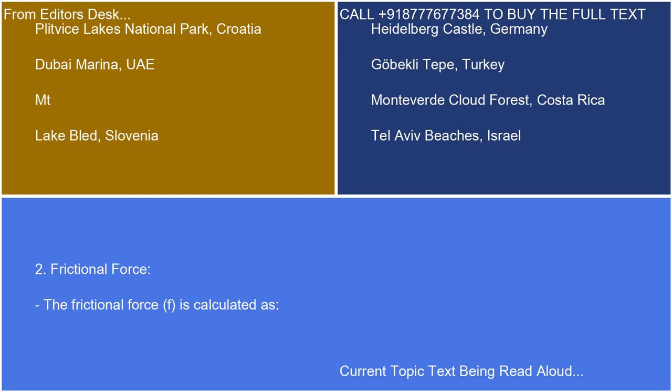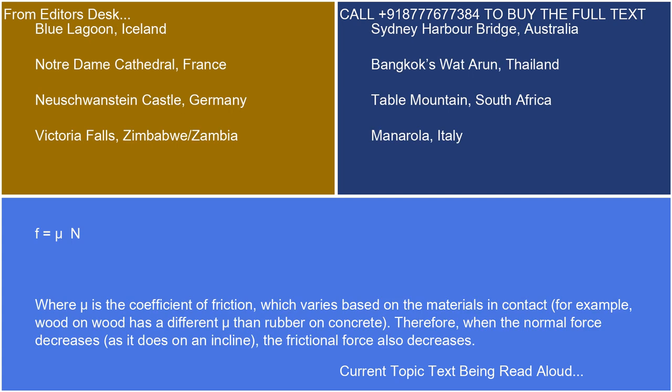Key Concept 2 — Frictional Force: The frictional force, F, is calculated as F = μN, where μ is the coefficient of friction, which varies based on the materials in contact. For example, wood on wood has a different μ than rubber on concrete. Therefore, when the normal force decreases, as it does on an incline, the frictional force also decreases.